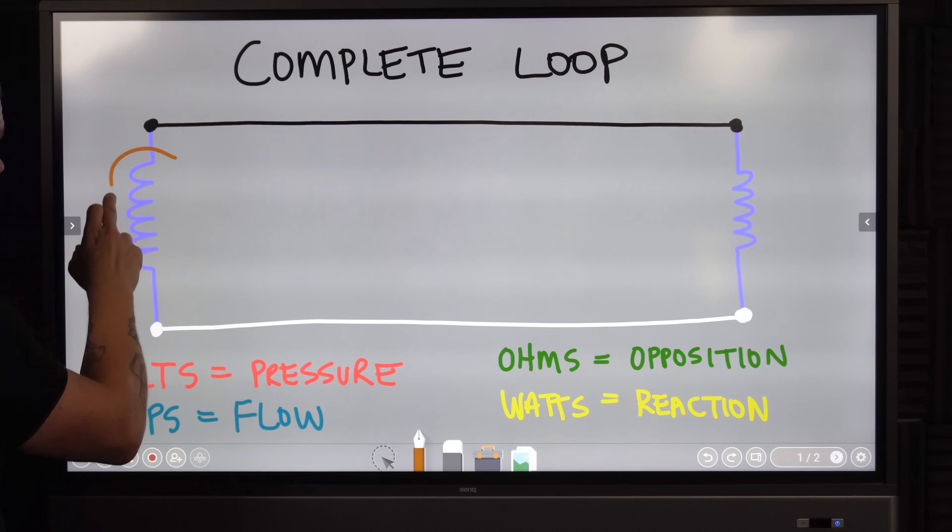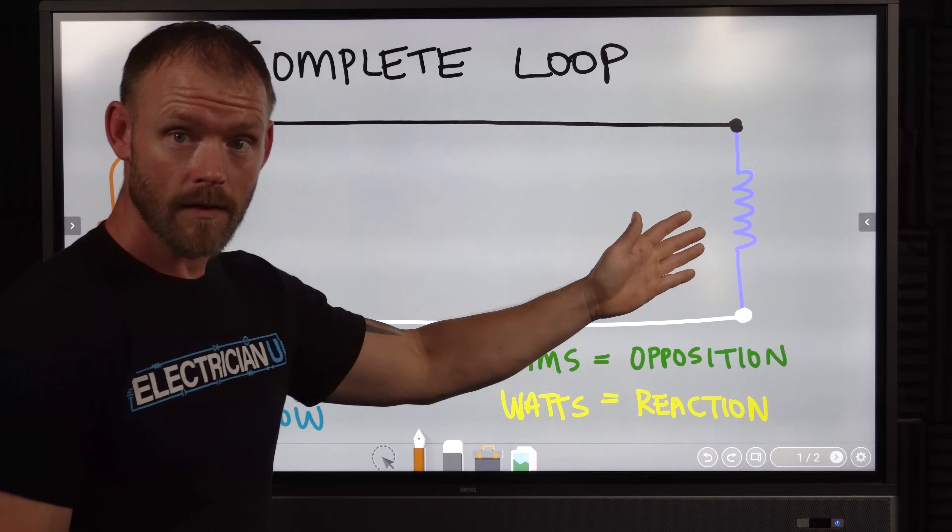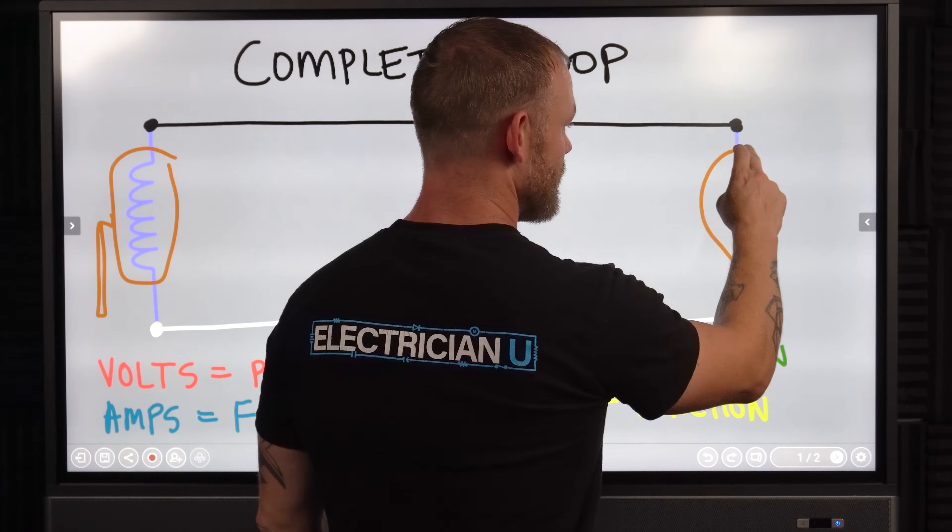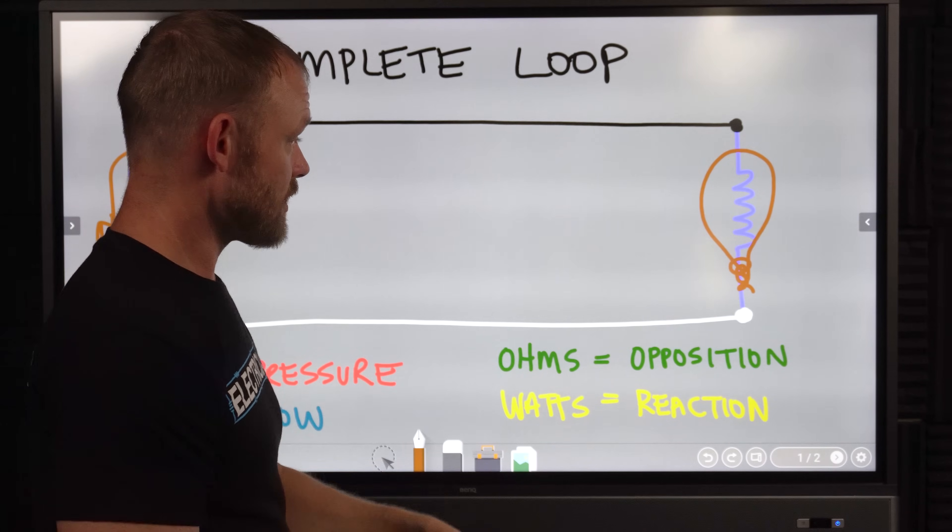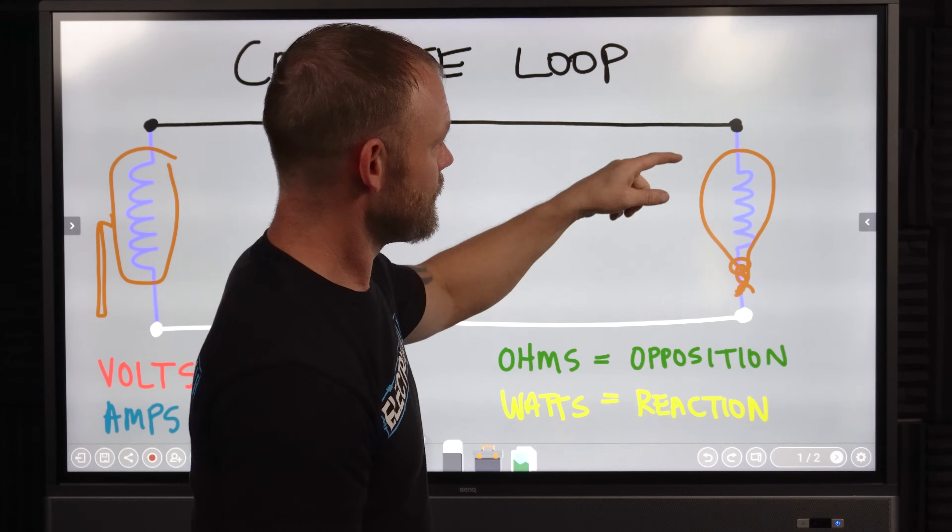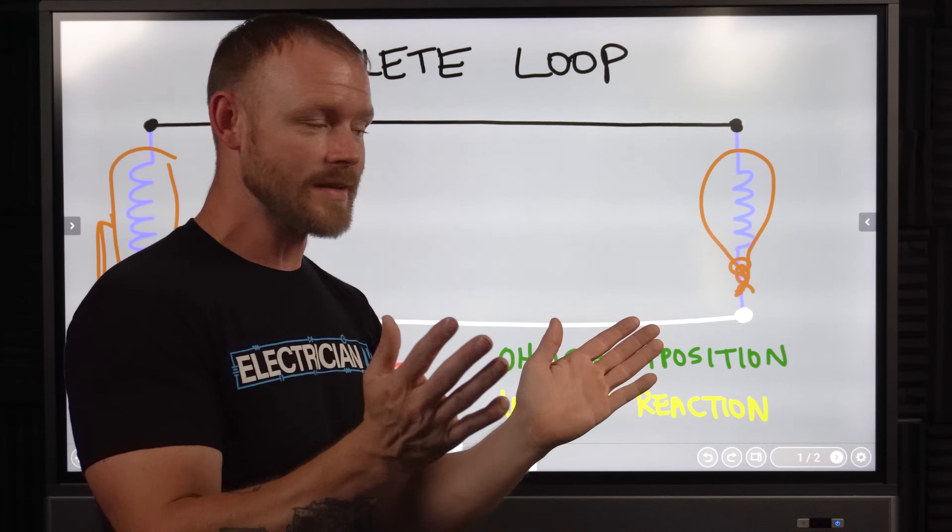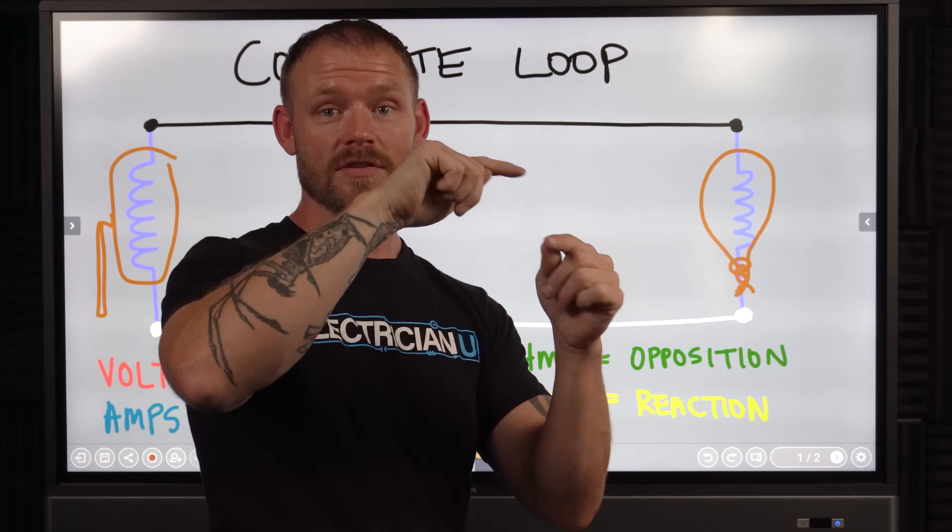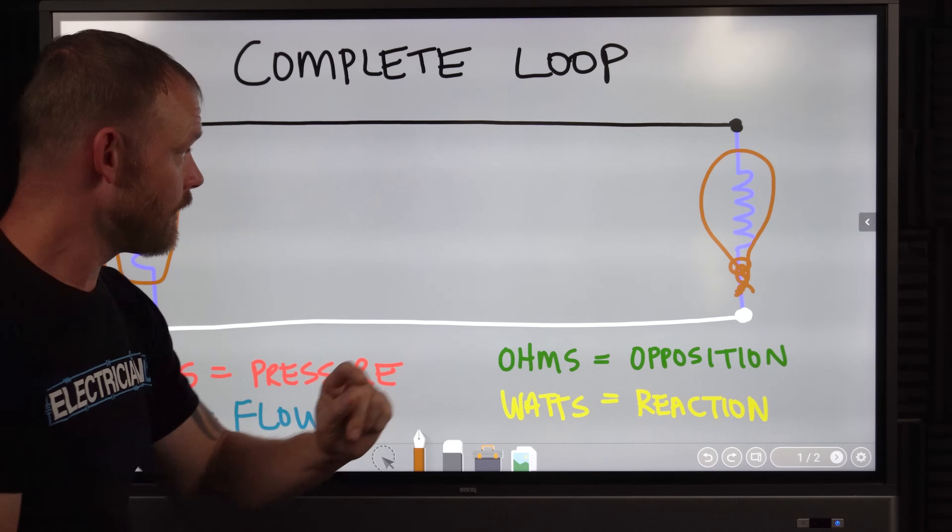Say we have a transformer out here on a pole somewhere. That is just a single piece of wire going through it at one end to have the start of our loop. And then say we have like a light bulb on the other end. It's another loop.